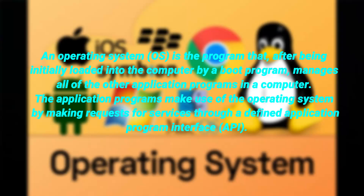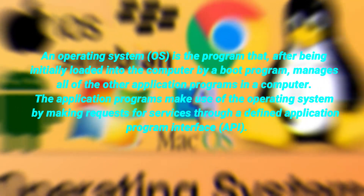What is an operating system? An operating system is the program that, after being initially loaded into a computer by the boot program, manages all the other application programs in a computer. The application programs make use of the operating system by making requests for services through the defined application program interface, or API.